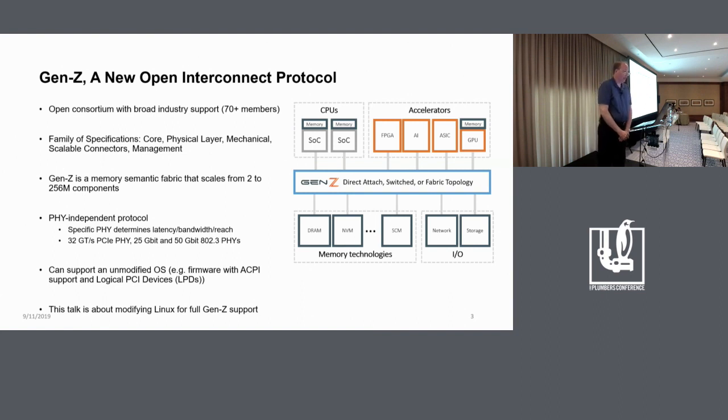And Gen Z is a PHY-independent protocol in the sense that there's a PHY-independence layer and you can run it against any number of PHYs depending on what kind of latency, bandwidth, and reach that you need. The three PHYs that are specified right now include a PCI PHY at 32 gigabytes, gigatransfers per second, and two different 802.3 PHYs at 25 and 50 gigabits.